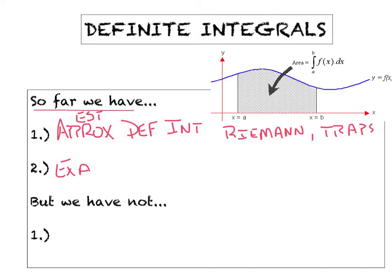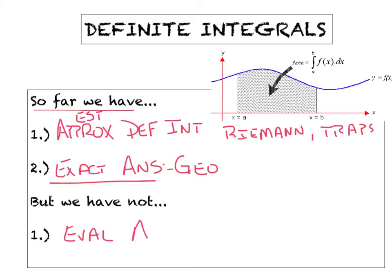Then we did get some exact answers geometrically. But the thing there — we were kind of at the mercy of the function. It had to be a very well-behaved function that created a geometric shape like a square, rectangle, semicircle, or trapezoid. We did get exact answers, but we have not been able to evaluate these analytically or algebraically — by hand. Once we learn the first fundamental theorem, we'll be prepared to handle any definite integral they throw at us.